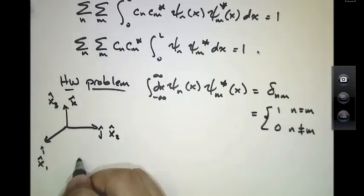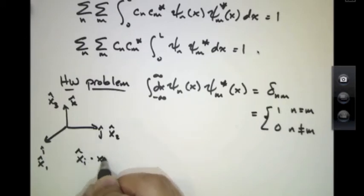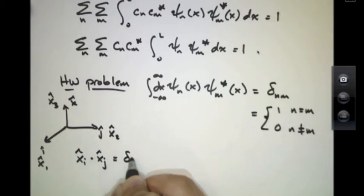These things have the property that xi hat dotted into xj hat equals δij. In other words, this i hat vector dotted into the j hat vector is 0, but i hat dotted into itself is 1.